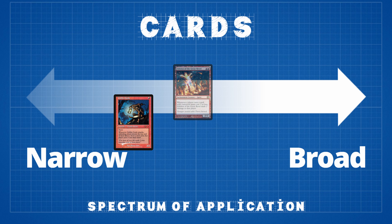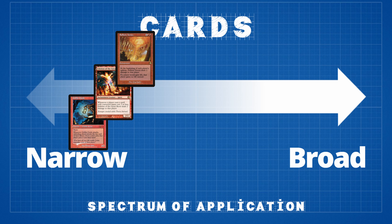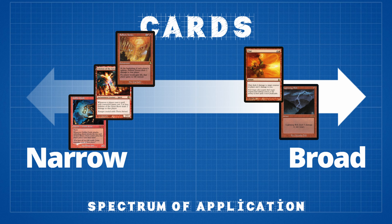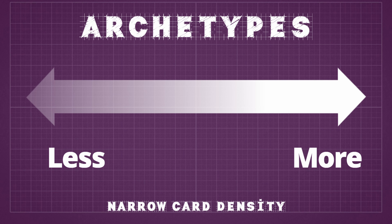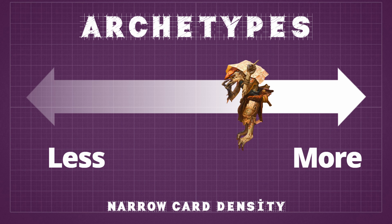Mono red aggro also wants direct damage cards such as Lightning Bolt, Char, or the aforementioned Sulfuric Vortex. Assessing these cards, we can see that Goblin Guide, Eidolon, and Vortex all have more narrow applicability, while Lightning Bolt and Char have broader application since many decks use direct damage for creature control or to kill a planeswalker. This yields an important insight: archetypes have their own spectrum regarding the necessary density of narrow cards. Mono red aggro plays some narrow cards but also takes advantage of cards with broader applicability.